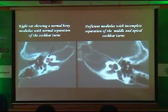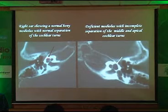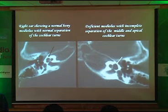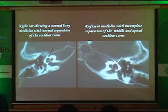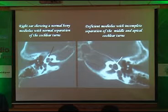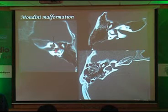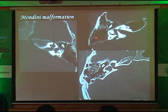Looking at a normal cochlea: a nice trifoliate appearance with the apical turn, interscalar septum, and modiolus visible — the modiolus appears bright or hyperdense. Compared to a cystic area within the cochlea, you can also pick up a dilated vestibular duct. You see cystic dilatation of the cochlea, cystic dilatation of the vestibule, and a dilated vestibular aqueduct — all visible on 0.3–0.6 mm sections. You can also see the tympanic portion of the facial nerve along the medial margin of the middle ear.